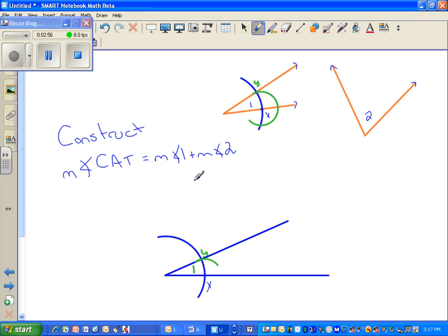Okay, but I'm trying to construct angle C, A, T. So it's measure of angle 1 plus measure of angle 2. So I'm going to need to copy angle 2 as well.